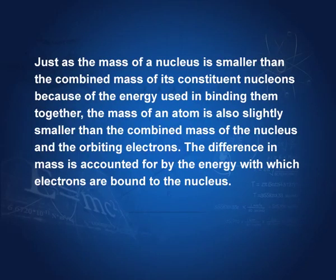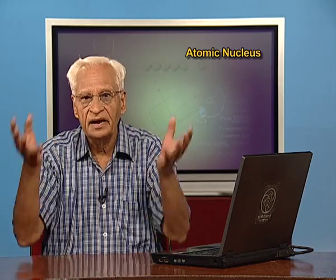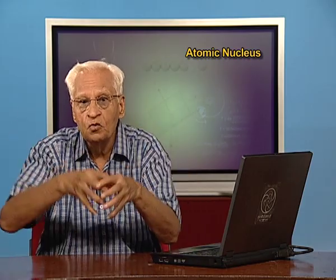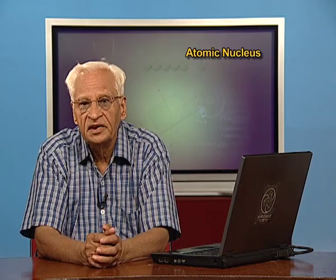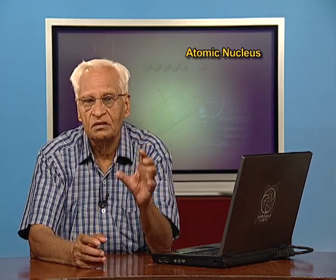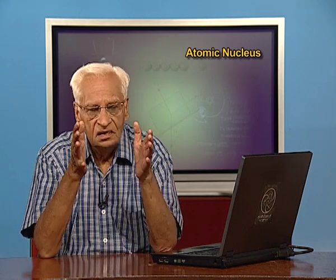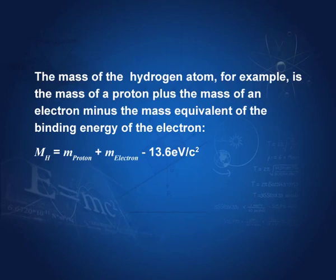Just as the mass of the nucleus is smaller than the combined mass of the nucleons due to the energy used in binding them together, the mass of an atom is also slightly smaller than the combined mass of the nucleus and the electrons. Electrons are bound to the nucleus, and when they are bound, they lose some energy. The mass of a hydrogen atom, for example, equals the mass of a proton plus the mass of an electron minus the binding energy divided by c squared.